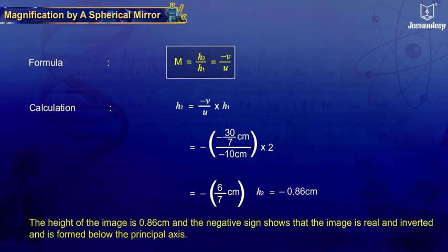The height of the image is 0.86 cm and the negative sign shows that the image is real and inverted and is formed below the principal axis.